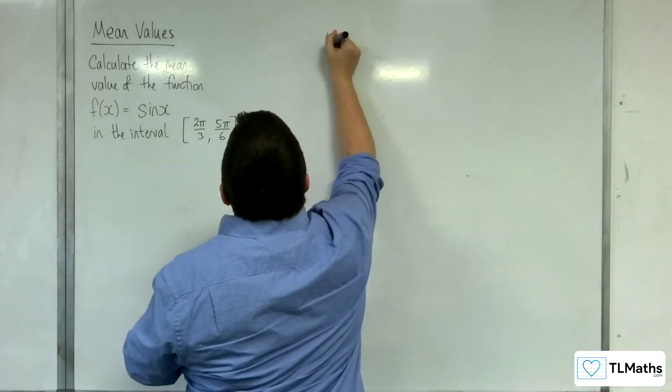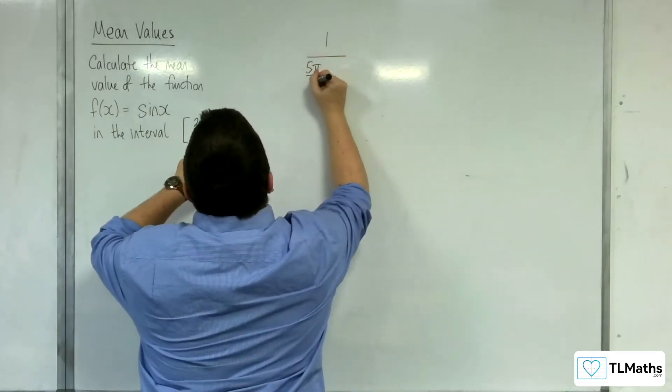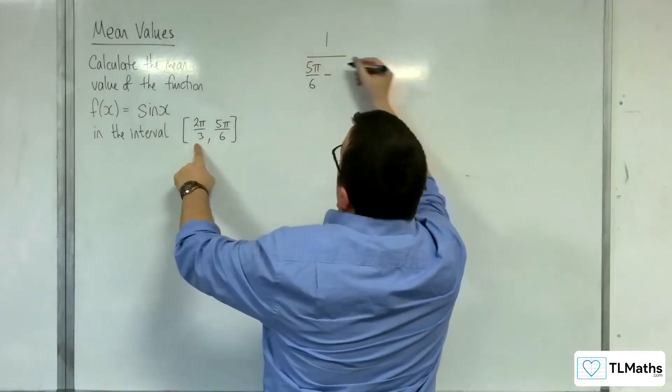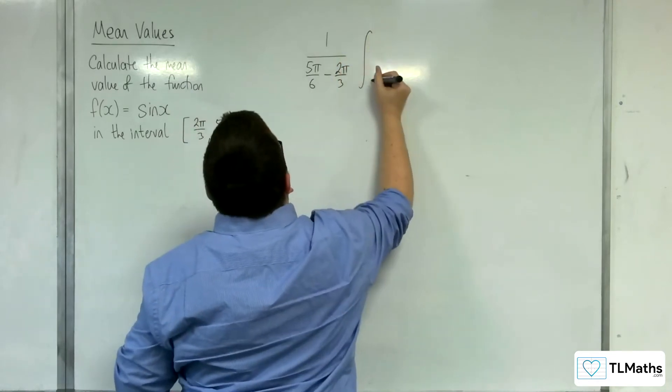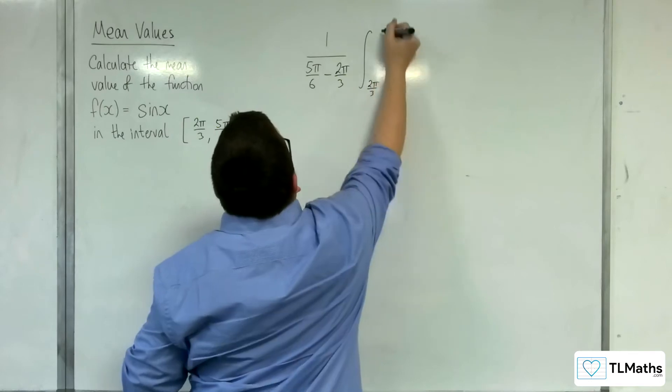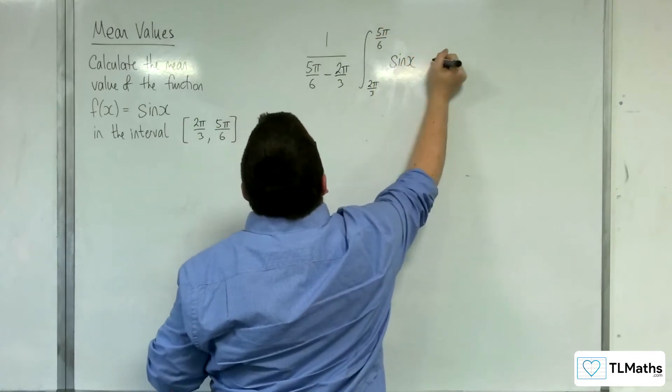So the mean value would be 1 over 5 pi over 6, take away 2 pi over 3, times by the integral between 2 pi over 3 and 5 pi over 6, sine x dx.